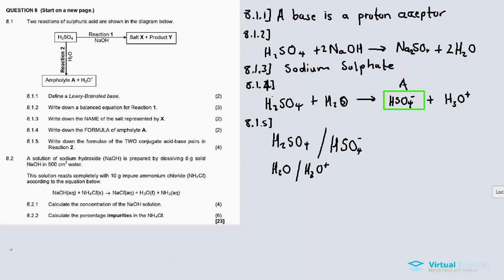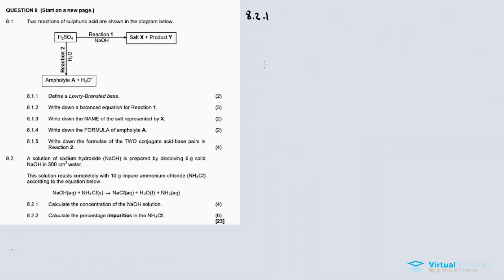8.2: A solution of sodium hydroxide is prepared by dissolving 6 grams of solid sodium hydroxide in 500 cm³ of water. This solution reacts completely with 10 grams of impure ammonium chloride — making sodium hydroxide the limiting reagent — according to the equation given. We need to calculate the concentration of NaOH and the percentage impurity of the ammonium chloride.